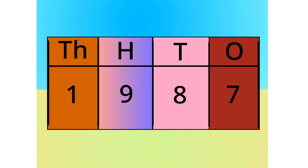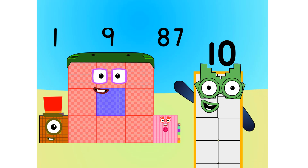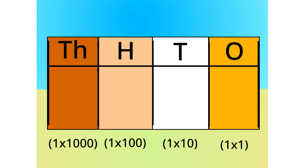Let's see this in block form, shall we? As you can see, this number is one thousand, nine hundreds, eight tens and seven ones. Let me carry on with the first method. Do you notice anything with this table? Correct — the number multiplies by ten each time it goes left one column. Because it multiplies by ten each time, we call this system base ten.